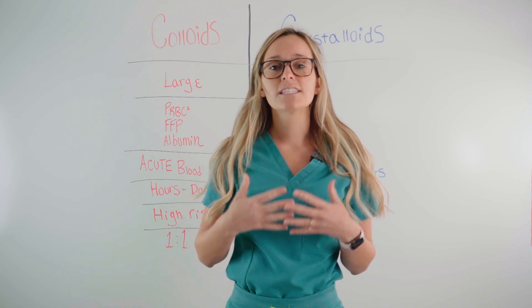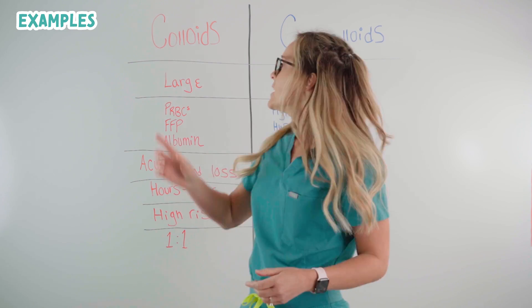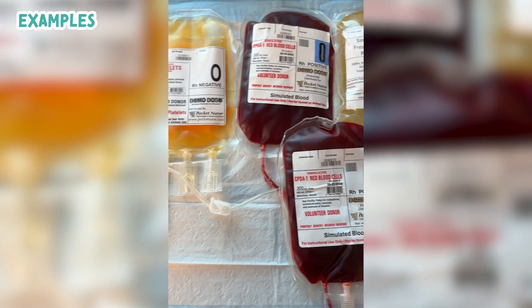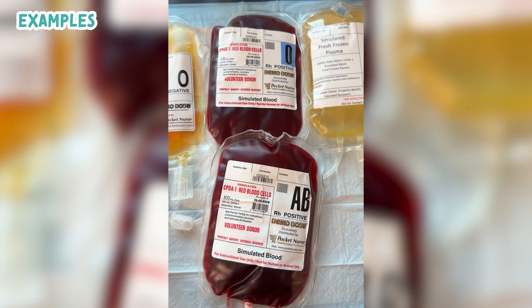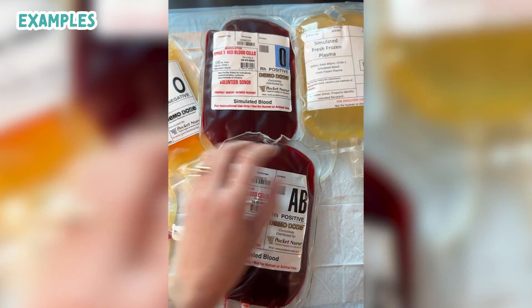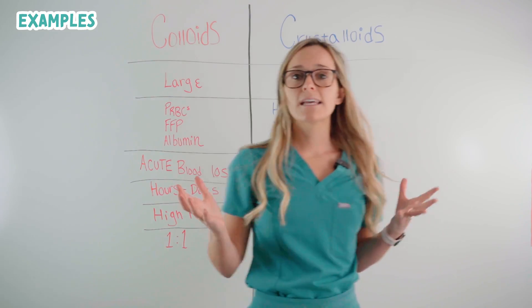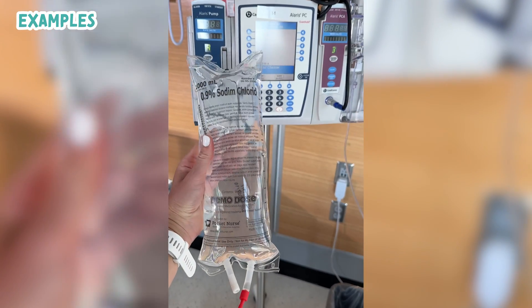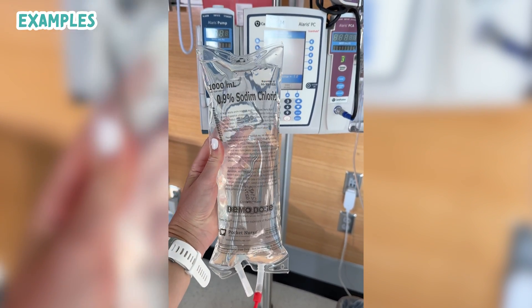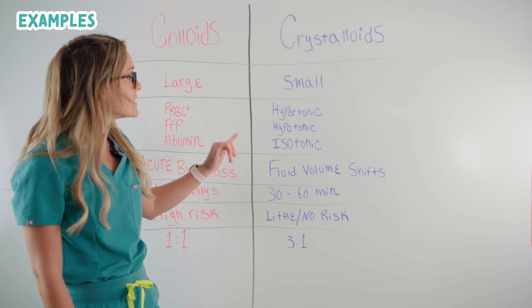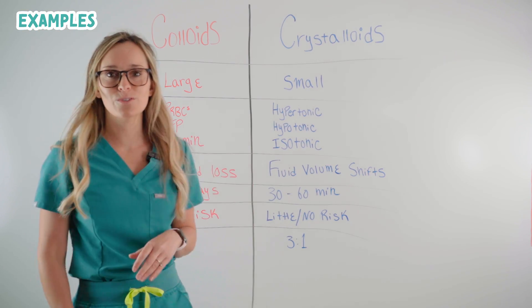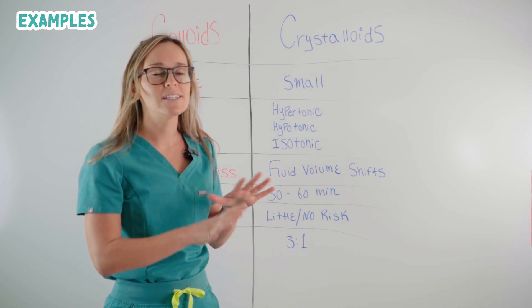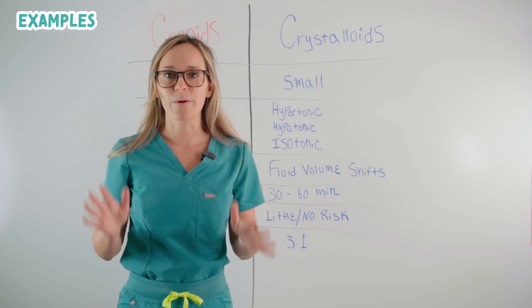Now let's look at some examples of both. Colloids' examples are packed red blood cells, fresh frozen plasma, and albumin, where the examples of crystalloids are hypertonic solutions, hypotonic solutions, and isotonic solutions. If you want to dive more into these solutions, I have an entire video going over that.